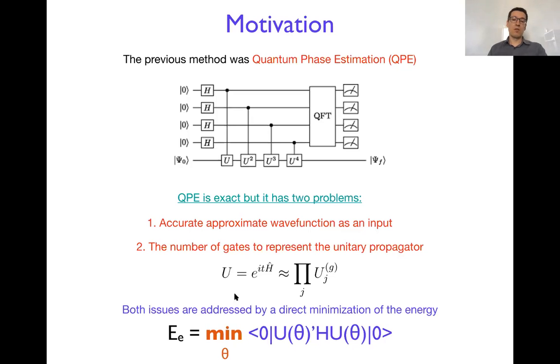Instead of essentially, like in QPE, setting up a particular unitary transformation and then breaking it down to a gate, what the variational quantum eigensolver is done is the unitary synthesized out of gates to minimize energy.